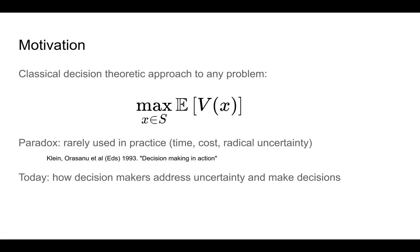In classical decision theory, the approach to any problem is to maximize your expected utility, or expected value to be more precise. You are given a feasible set S, and you choose an option X which will maximize your expected value. In order to do this calculation, you need to have a good sense of what are the available alternatives, what are the available Xs, what is the set of possible events that could happen to you, and their probability. Only then you can calculate the expected value of V. You can see the complexity, and that's why this type of analytical approach is rarely used in practice.